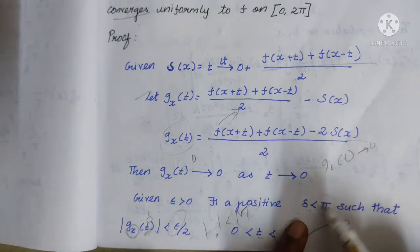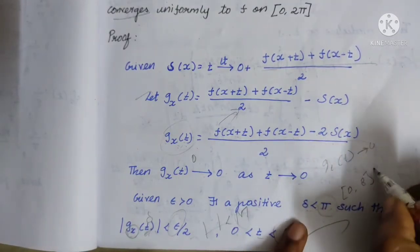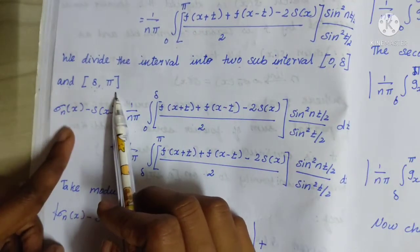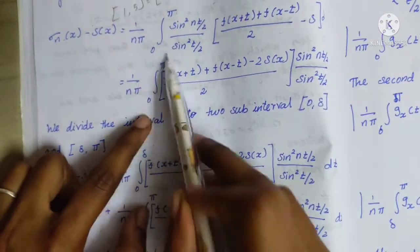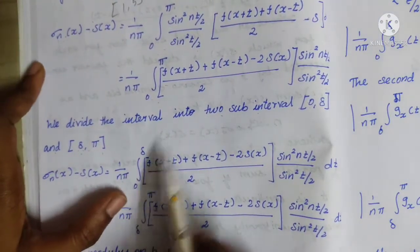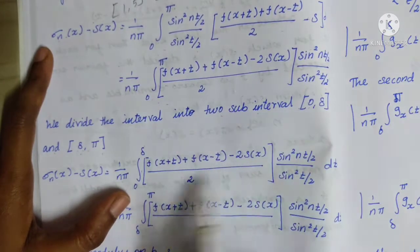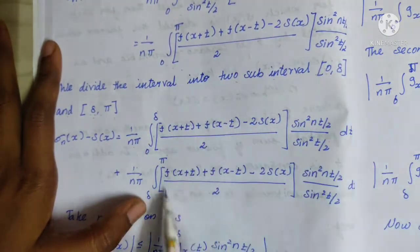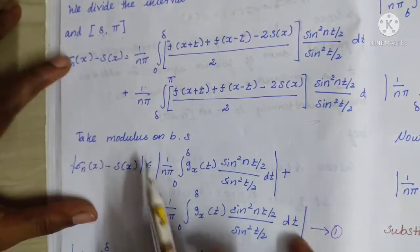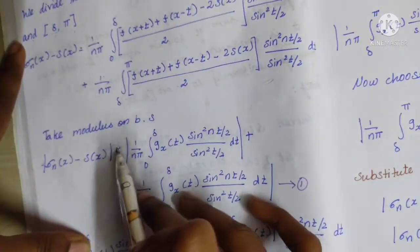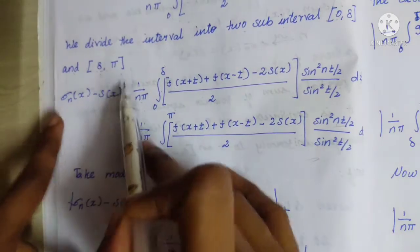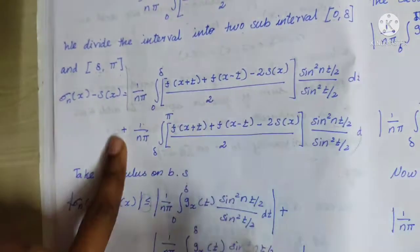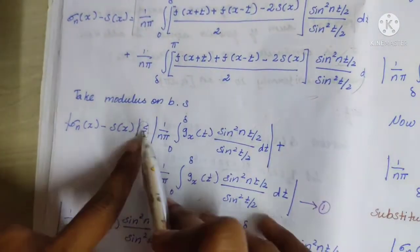Since δ < π, we have the two sub-intervals [0, δ] and [δ, π]. So σₙ(x) − s(x) = (1/nπ) ∫₀^δ + (1/nπ) ∫_δ^π. Taking modulus on both sides, we use ≤. We substitute gₓ(t) = [f(x+t) + f(x−t) − 2s(x)] / 2 for the integrand.